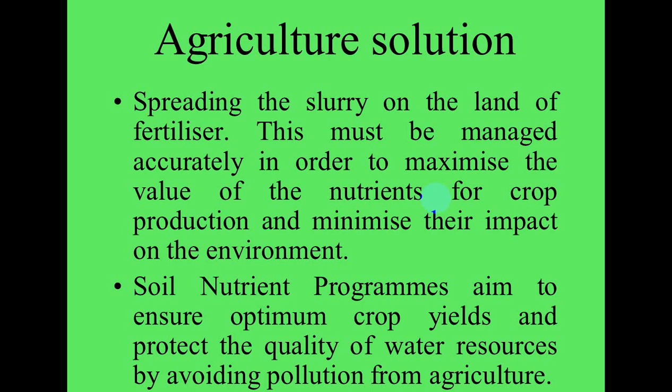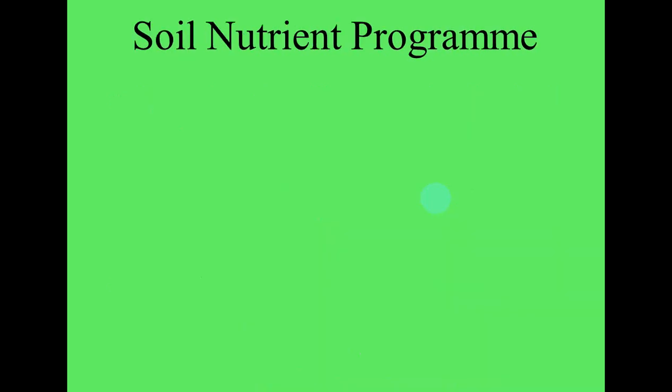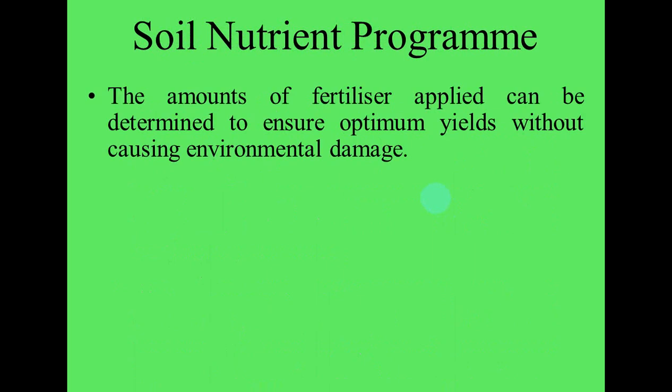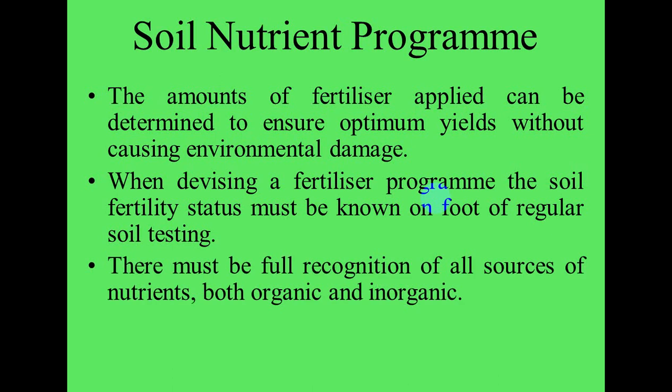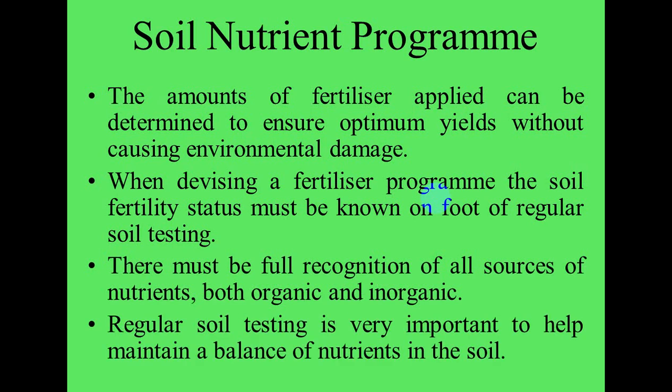Soil nutrient programs aim to ensure optimum crop yields and protect water quality by avoiding pollution from agriculture. The amount of fertilizer applied can be determined to ensure optimum yield without causing environmental damage. When devising a fertilizer program, the soil fertility status must be known through regular soil testing, with full recognition of all sources of nutrients, both organic and inorganic.